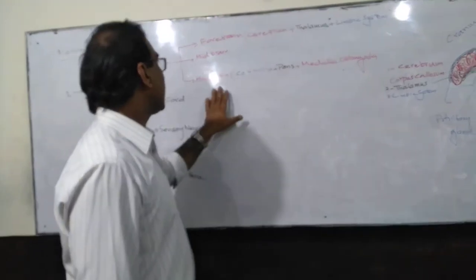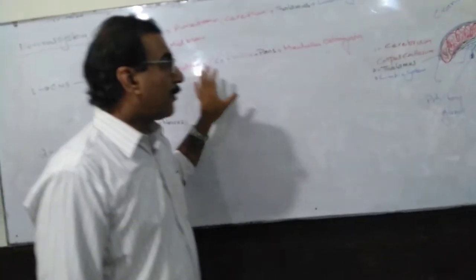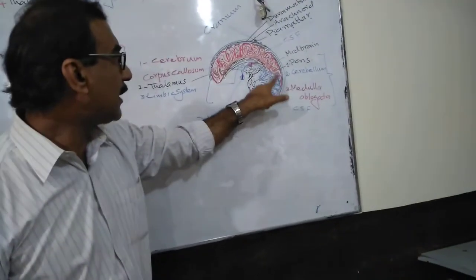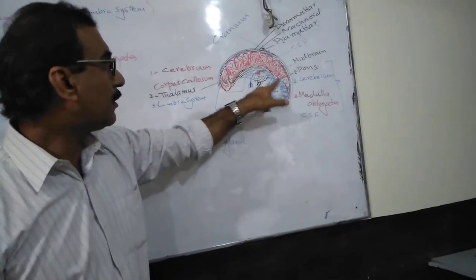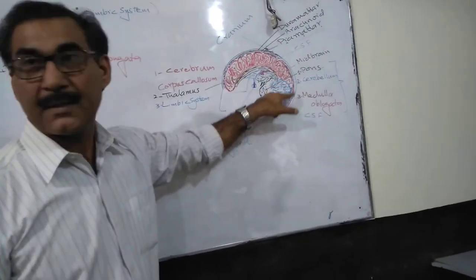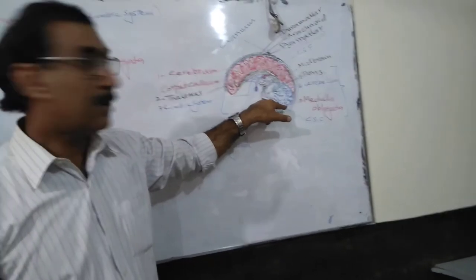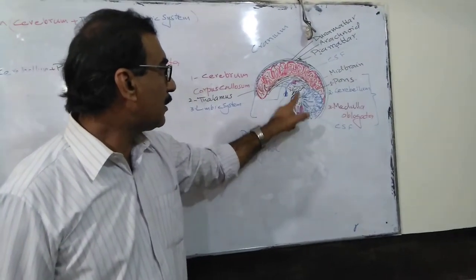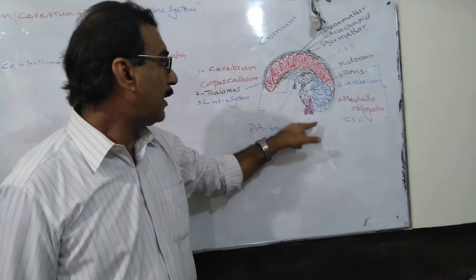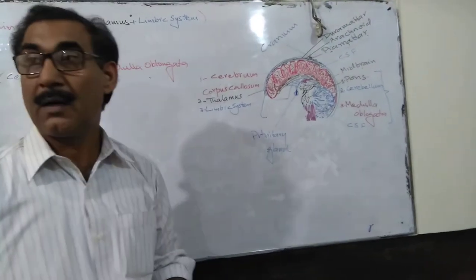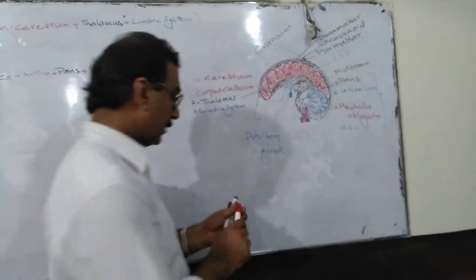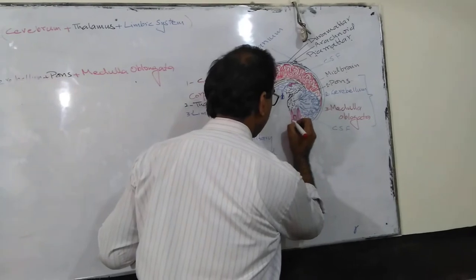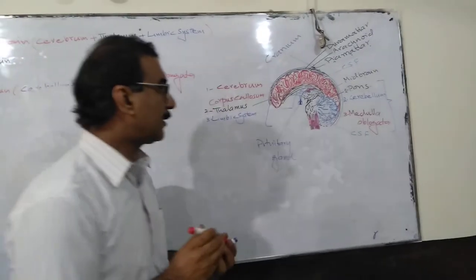As far as the hindbrain is concerned, it consists of three parts: the cerebellum, the pons, and the medulla oblongata. These three parts constitute the hindbrain.